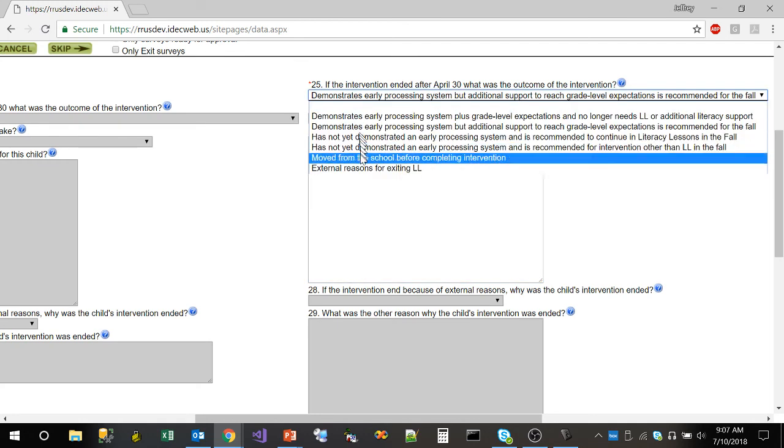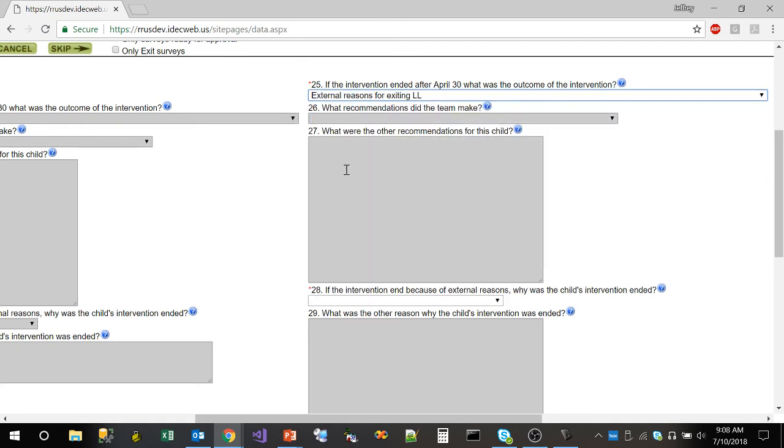If they happen to select an external reason for exiting literacy lessons, they will be directed to answer question 28 and they indicate that external reason. If they select other, then they will be asked to complete question 29.